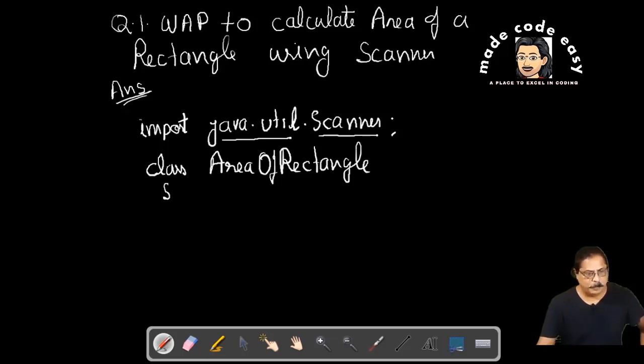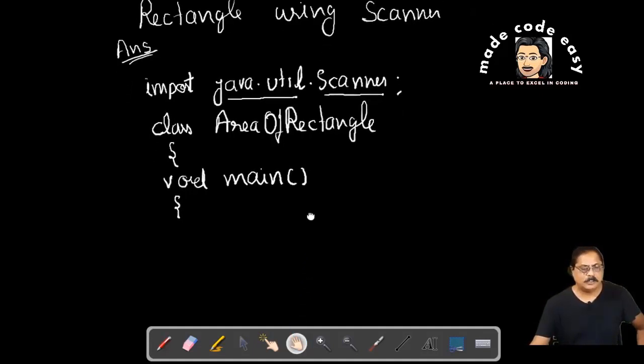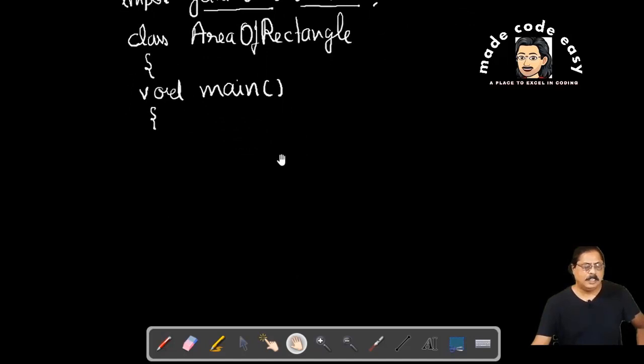Curly bracket begin, then we write void main. You can write public static void main String args, but I will write here void main only. Now this is the structure: we have to write class name, curly bracket, then void main.